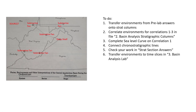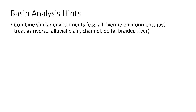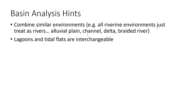Here are a couple of hints for when you're actually doing the correlations. First, combine similar environments — you can combine all riverine environments and treat them as rivers in general. That includes alluvial plain, meandering river channel, delta, and braided river. Also, lagoons and tidal flats are virtually interchangeable — they're very challenging to tell apart in the geologic record, so you can treat them as the same thing when correlating.